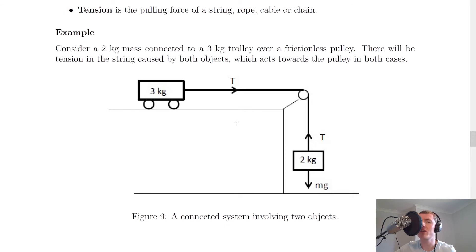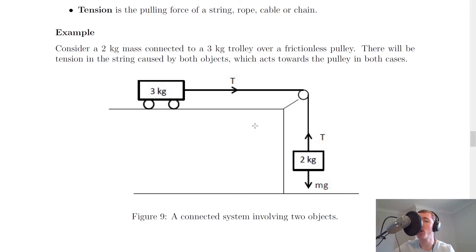You might also see a situation where two masses are sitting side by side on a surface, and you could be asked to calculate the unbalanced force acting on one of them. To do this, you first need to find the overall acceleration of the system by adding up the masses and using F equals ma. Finding the acceleration of the system first is a common theme in connected system questions.